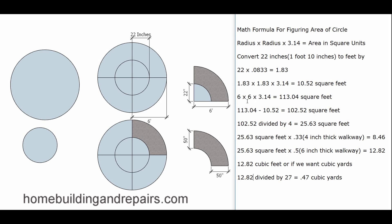Then we simply repeat the same process: dividing by four, getting the square feet, taking the square feet, and multiplying by the thickness of the walkway to get the cubic foot measurement. Now if we want to change to a six-inch thick walkway, we need to change the decimal to point five. Point five represents one half, and six inches is one half of twelve inches. So here we have the cubic feet of a sidewalk that's going to be six inches thick. To find how many cubic yards, simply divide by twenty-seven and you would have almost half a yard of concrete.